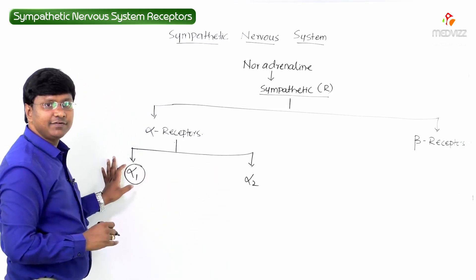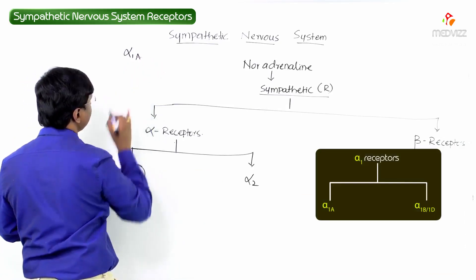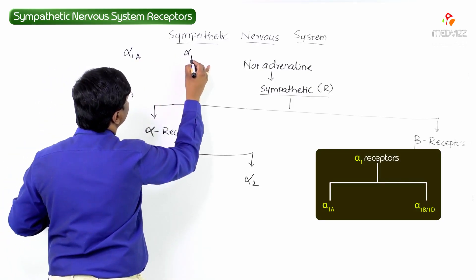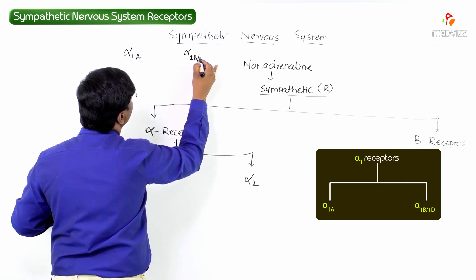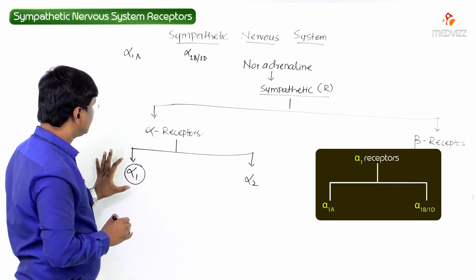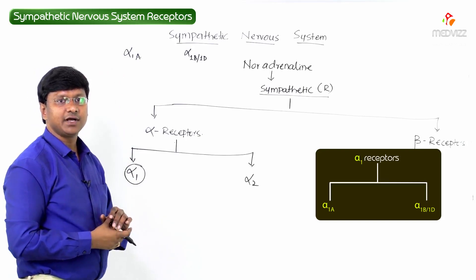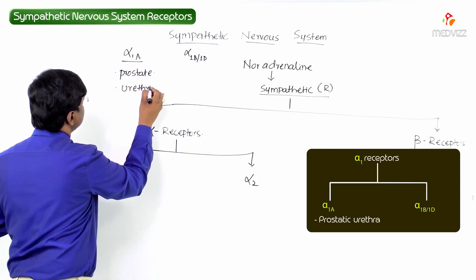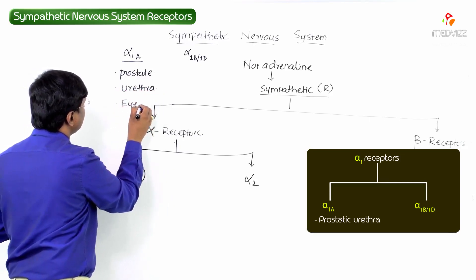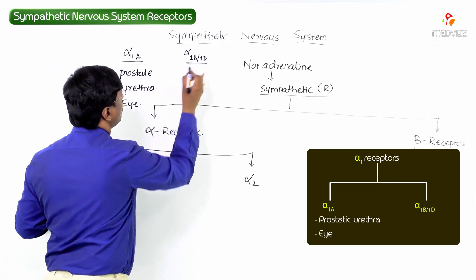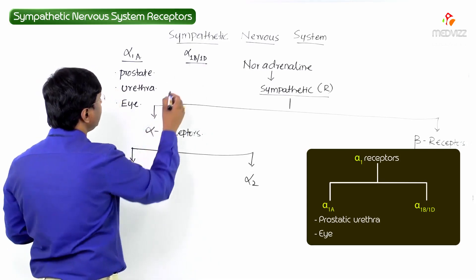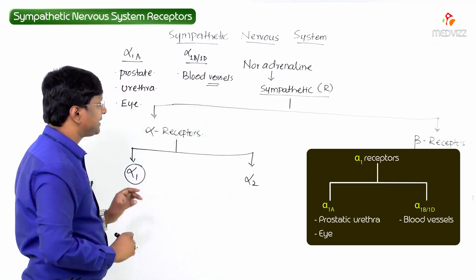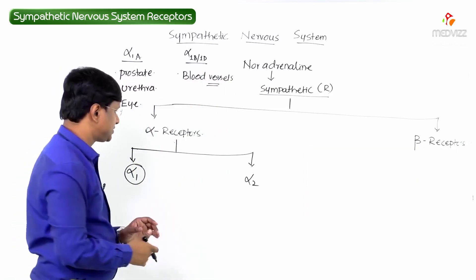The subtypes of alpha 1 receptors are alpha 1a and alpha 1b or 1d. Alpha 1a is present in the prostate, urethra, and within the eye. Alpha 1b or 1d receptors are mainly present within the blood vessels. When these receptors are stimulated, there will be vasoconstriction and maintenance of the blood pressure.